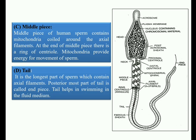The middle piece is the third part of the sperm and contains mitochondria that are coiled spirally around the axial filament. The mitochondria provide energy for the motility of the sperm. At the end of the middle piece, there is a ring centriole present.